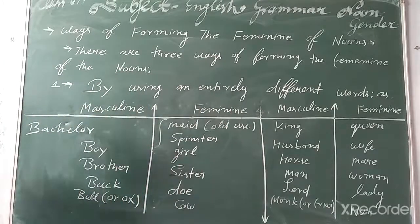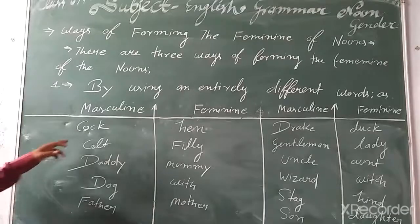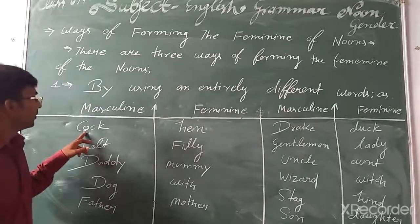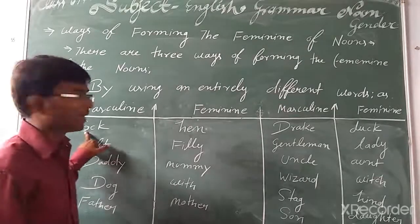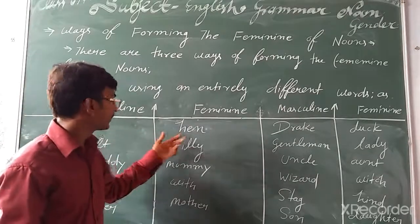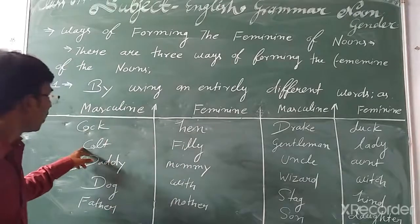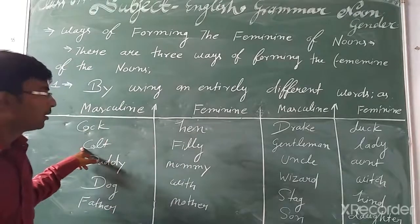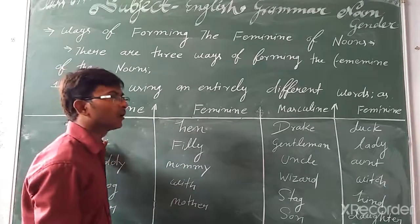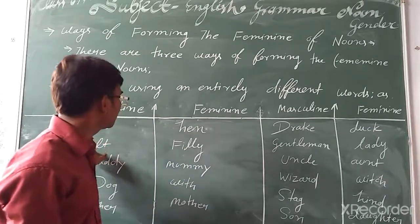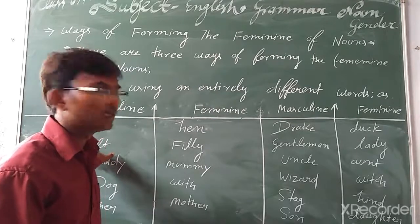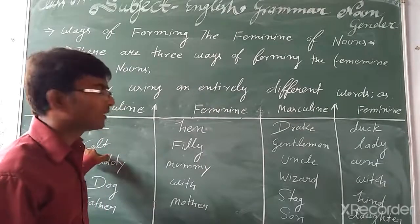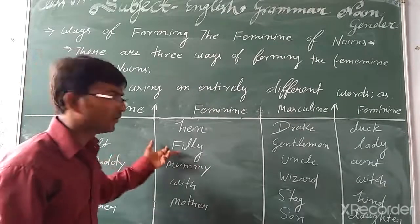Another example: the masculine gender is 'colt' — the Hindi meaning of colt is 'horse child', meaning a young horse. The feminine gender would be 'filly'.